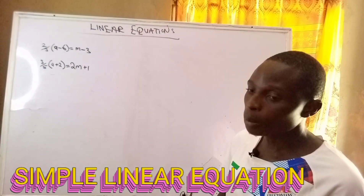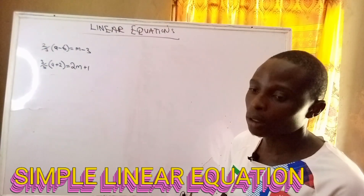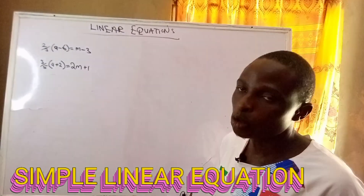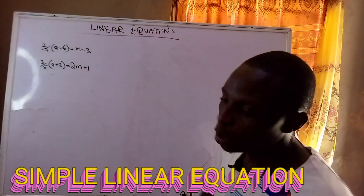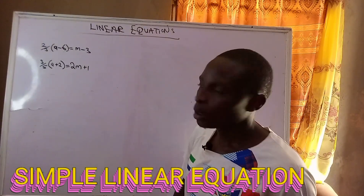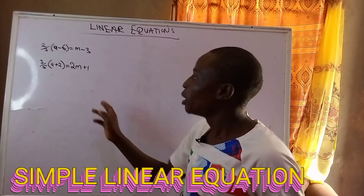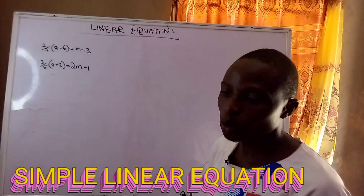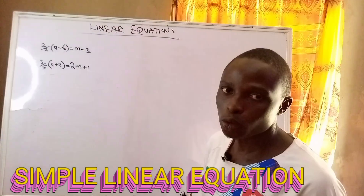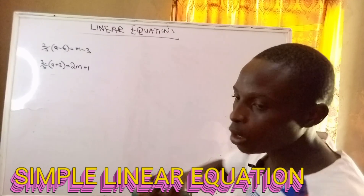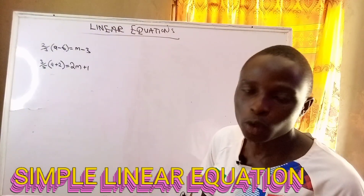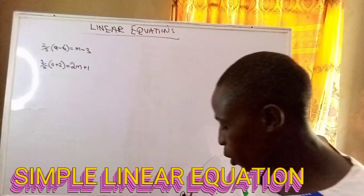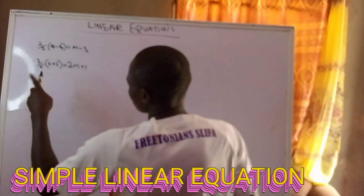The first thing to do is to pick the first equation and simplify it so as to have a particular equation that is good for solving simultaneous equations. Then drop it, pick the next one, simplify it also, and have a perfect equation that will be good for solving simultaneous equations.